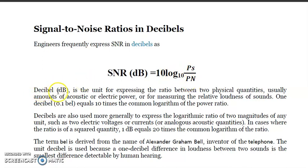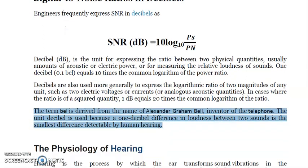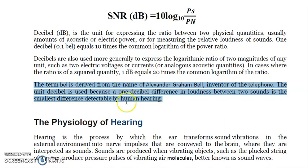The decibel is a smaller unit compared to the bel. The bel is a term derived from the name of Alexander Graham Bell, the inventor of the telephone. The unit decibel is used because a one decibel difference in loudness between two sounds is the smallest difference detectable by human hearing. One bel is equal to 10 decibels.